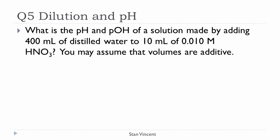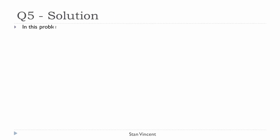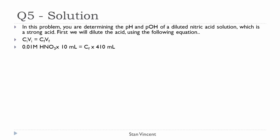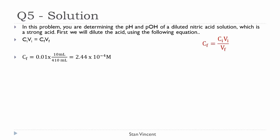Question 5: What is the pH and pOH of a solution made by adding 400 mL of distilled water to 10 mL of 0.010 molar HNO₃? You may assume that volumes are additive. In this problem you are determining the pH and pOH of a diluted nitric acid solution, which is a strong acid. First, dilute the acid using: C₁V₁ = C₂V₂. The initial concentration is 0.010 M and the initial volume is 10 mL. The final volume is 400 + 10 = 410 mL. Final concentration = 2.44 × 10^(-4) mol/L.